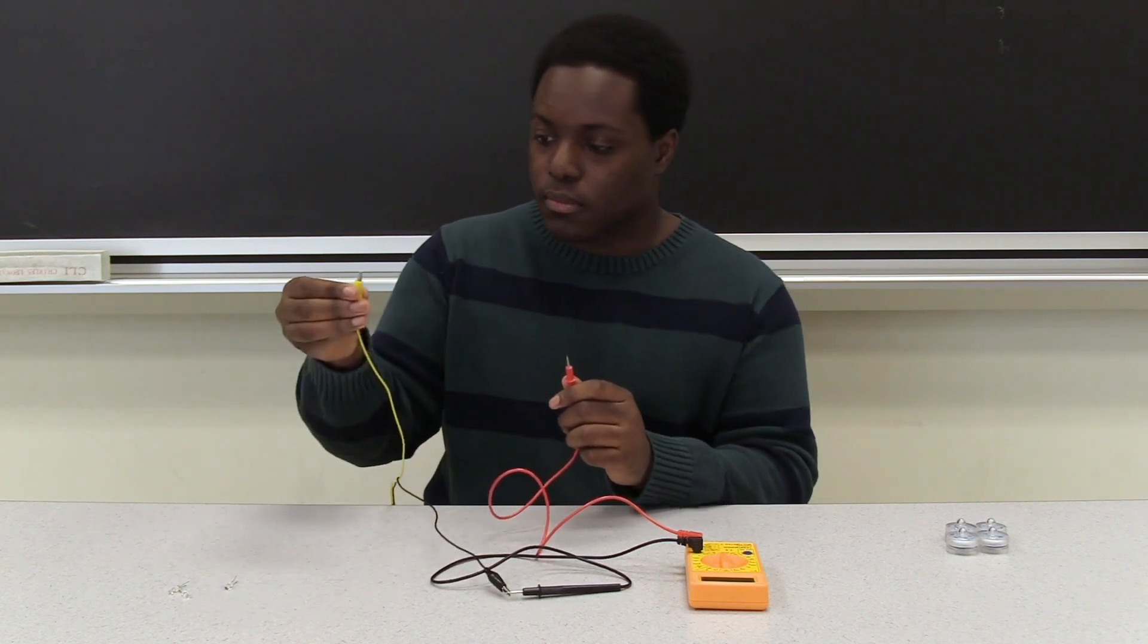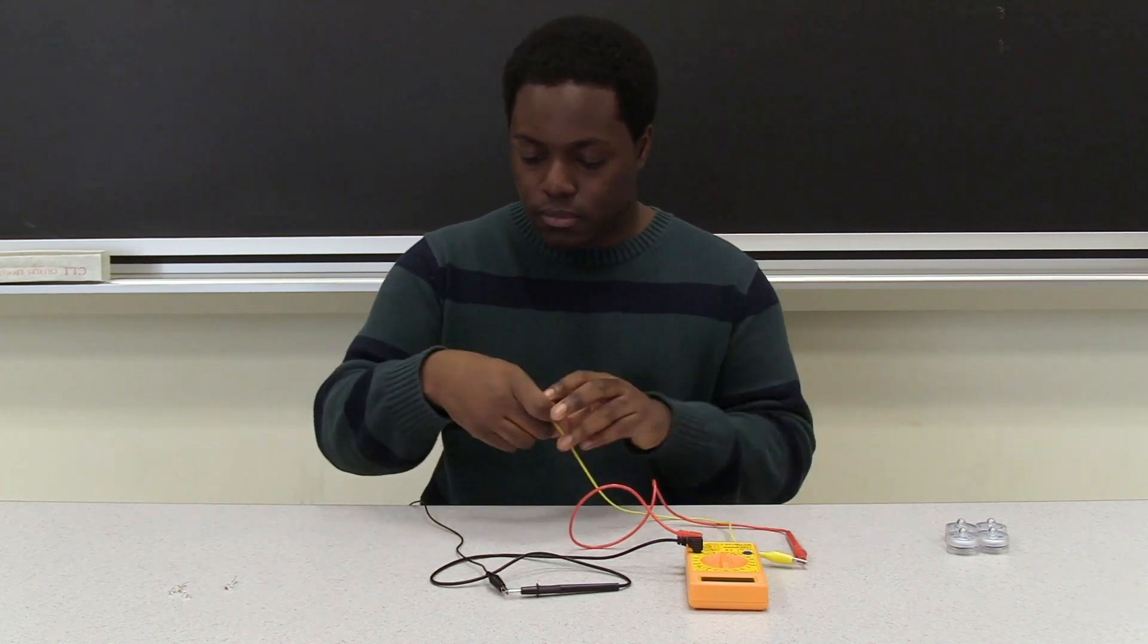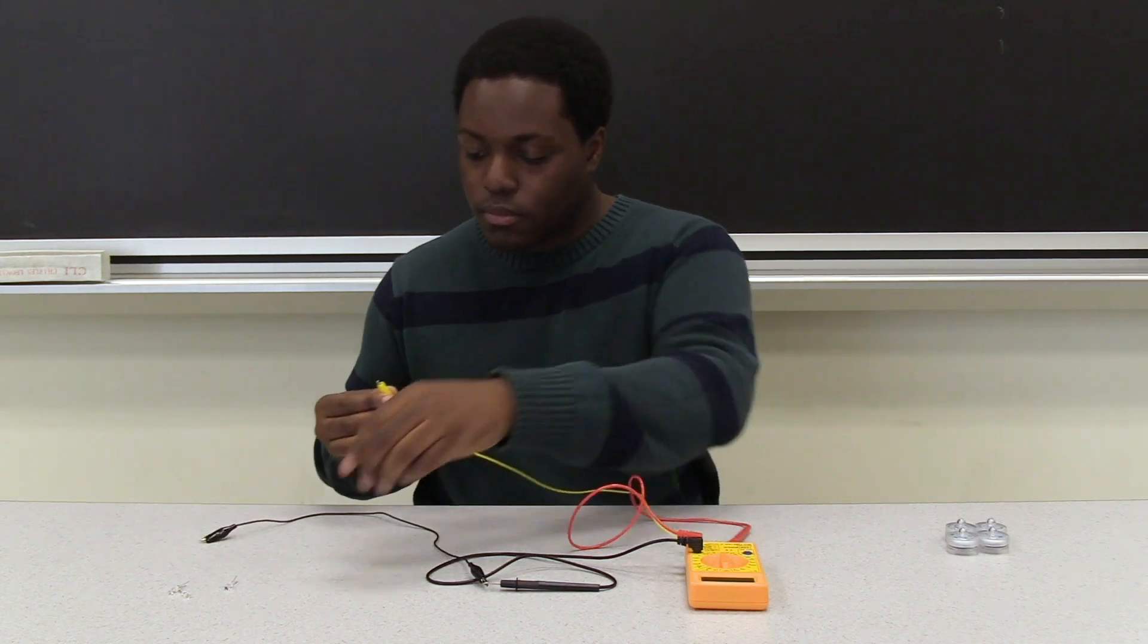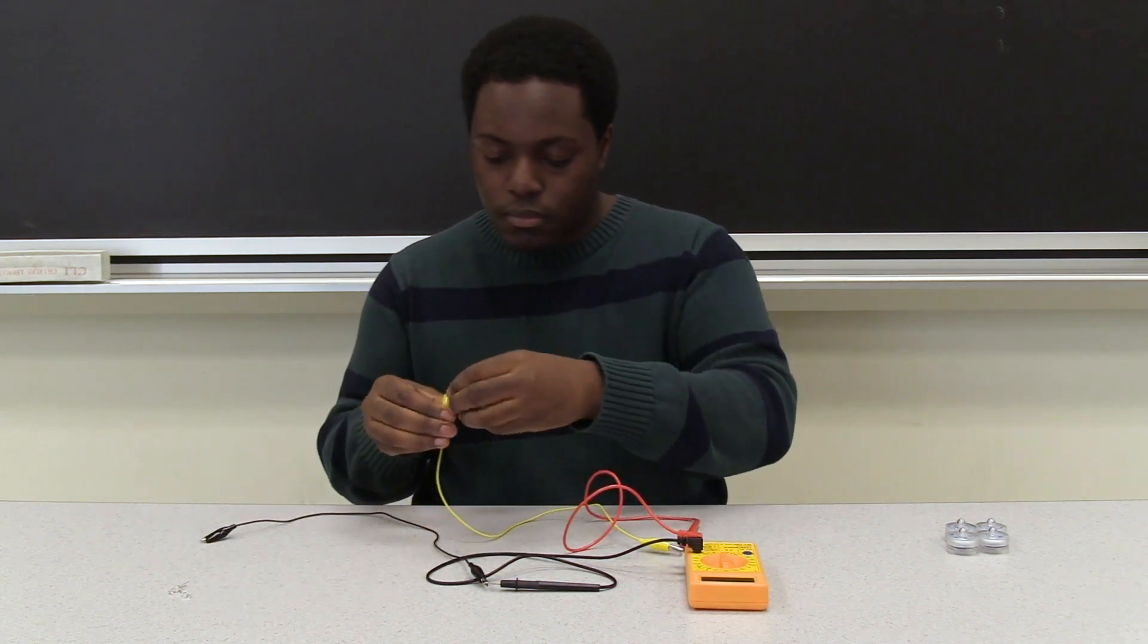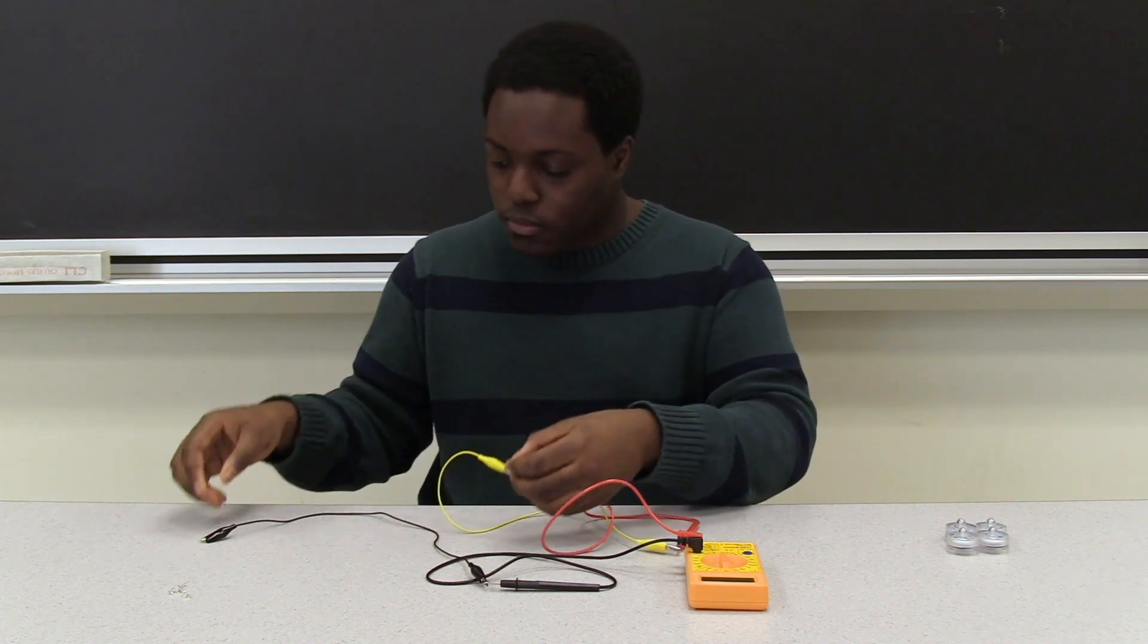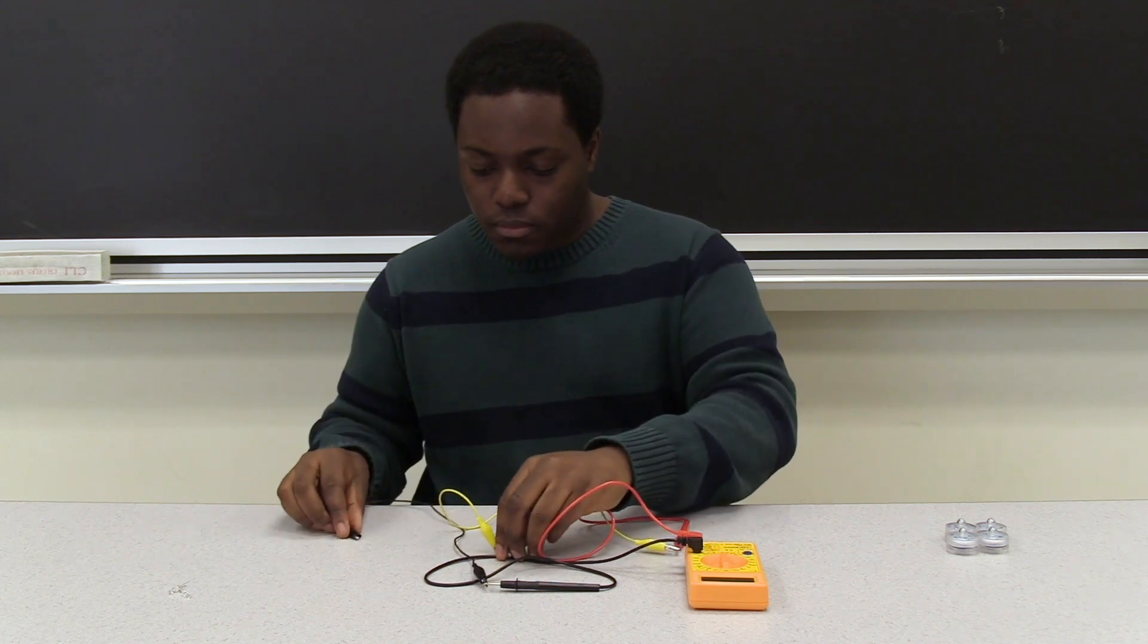Grab one of your small LEDs and connect the free end of the alligator clip connected to the red lead probe to the positive end of the LED. This is the longer leg of the LED. And then connect the other free end that's connected to the black lead probe to the negative end of the LED. That's the short leg of the LED.